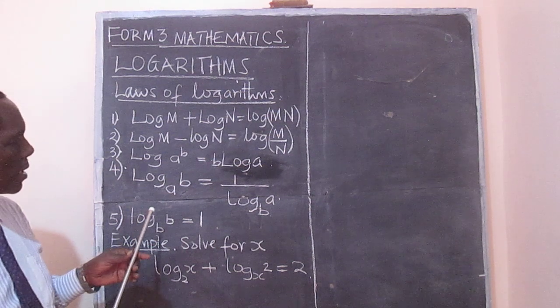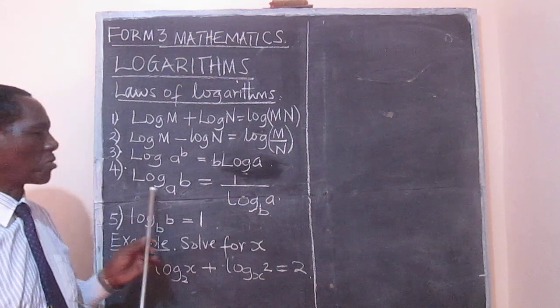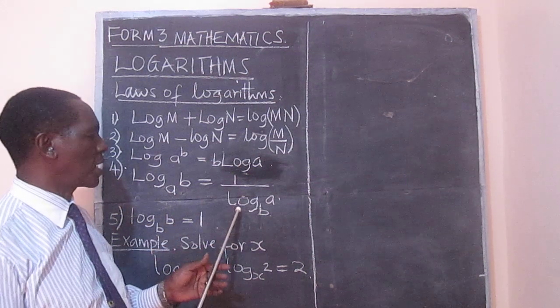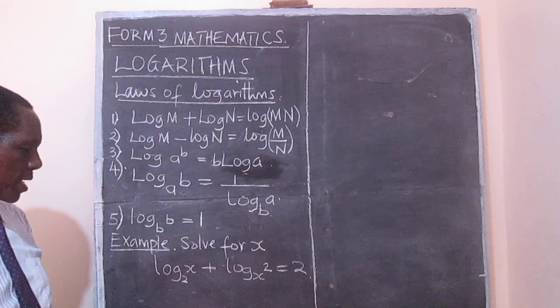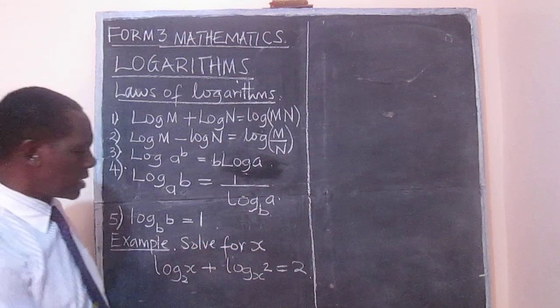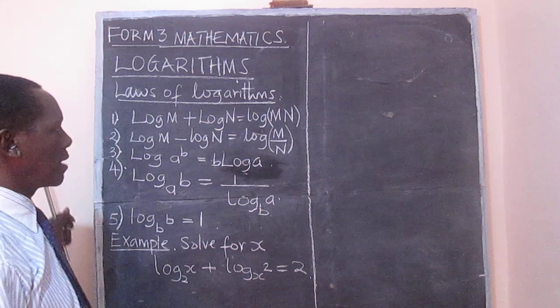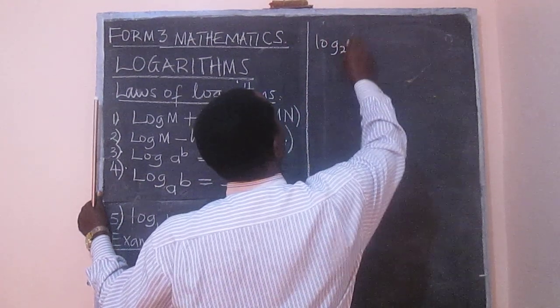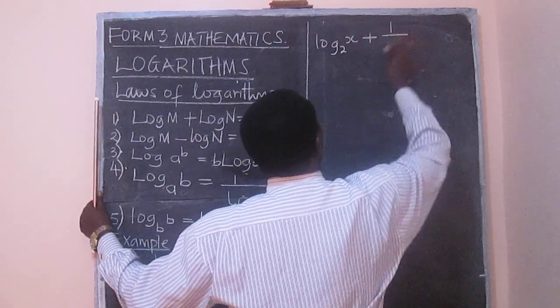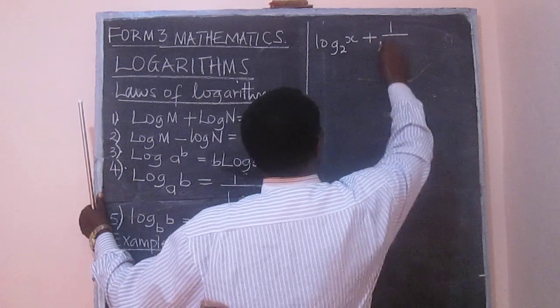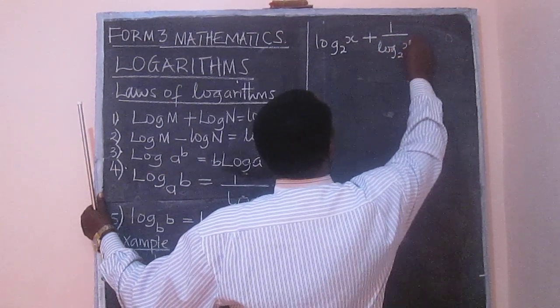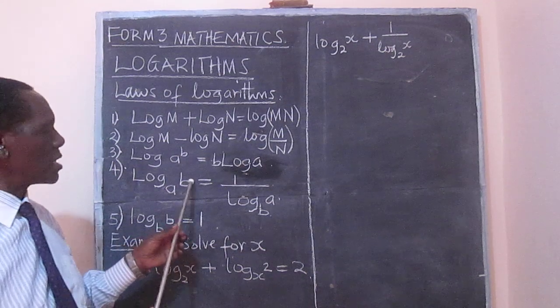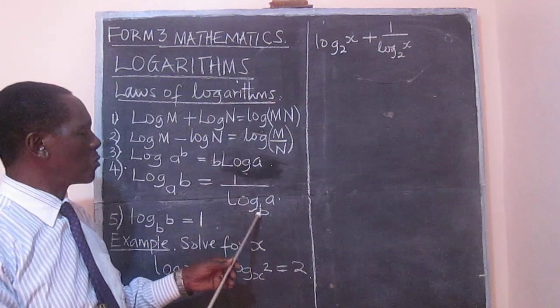So we are going to apply rule number 4, the law number 4, where we say log to base a of b is equal to 1 over log to base b of a. So, let's decide to change this one, so that we now have this coming to log to base 2 of x plus 1 over log to base 2 of x. So I have actually applied this one directly, that the logarithm to base a of b is equal to 1 over the logarithm to base b of a.